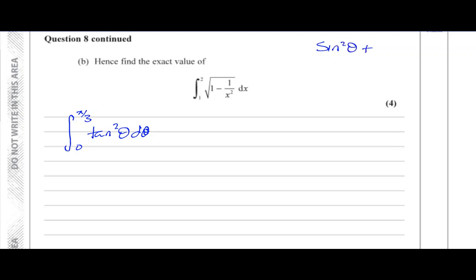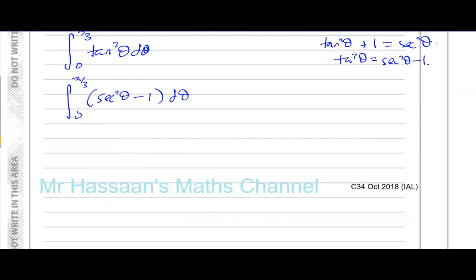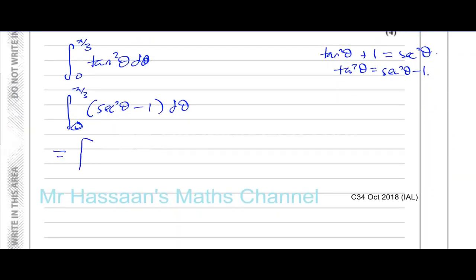Using the identity sine squared theta plus cosine squared theta equals 1, if I divide through by cosine squared theta, I get tan squared theta plus 1 equals sec squared theta. So I can replace tan squared theta with sec squared theta minus 1. Integrating sec squared theta minus 1 with respect to theta: sec squared theta becomes tan theta, and minus 1 becomes minus theta. No plus C needed as it's a definite integral, so we substitute the limits in now.